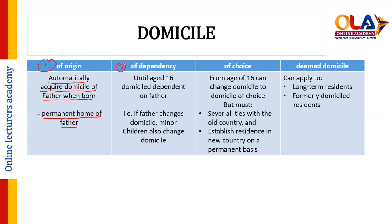The second type is domicile of dependency. Until the age of 16, a child is domicile-dependent on their father's domicile. So if the father changes domicile, the minor children also change domicile. The child follows the father's domicile both at the time of origin and until the age of 16.